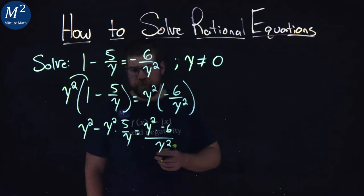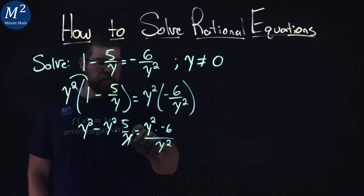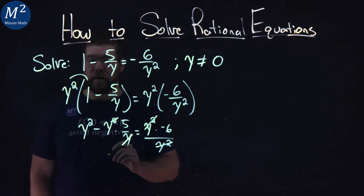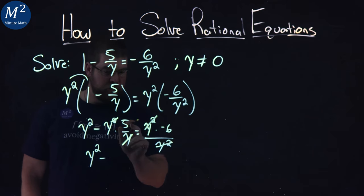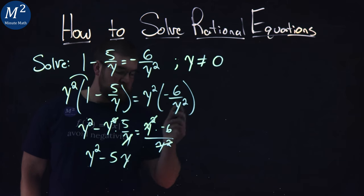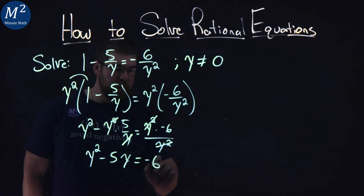Well, we can see here y and the square cancel out and the y squared and y squared cancel out here. So we're left with y squared minus 5y left over and just minus 6 on the right-hand side.